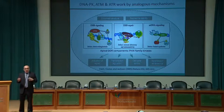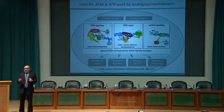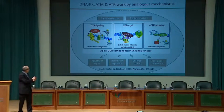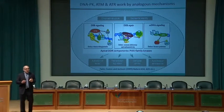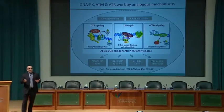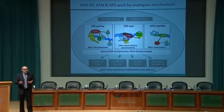ATM primarily controls many activities within the cell in response to DNA damage — including cell proliferation, cell death, and cell senescence — and is strongly connected to p53. Importantly, defects in ATM cause a disease in humans called ataxia telangiectasia, a neurodegenerative cancer predisposition syndrome.